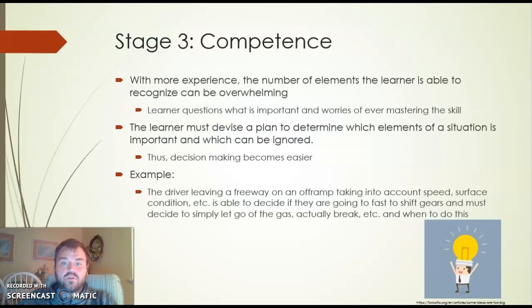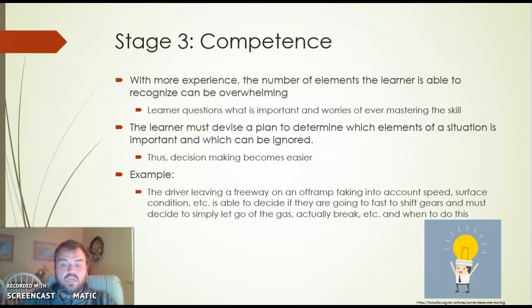Stage three is competence. With more experience, the number of elements the learner recognizes can be overwhelming. The learner questions what is important and worries about ever mastering the skill because there are so many different factors involved. The learner must devise a plan to determine which elements of a situation are important and which can be ignored, making decisions easier. For the driver example, leaving a freeway on an off-ramp, the driver takes into account speed and road conditions and decides whether to let off the gas, shift gears, or apply the brake and when to do so.